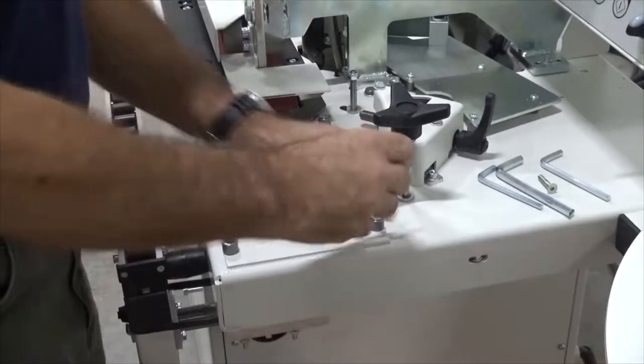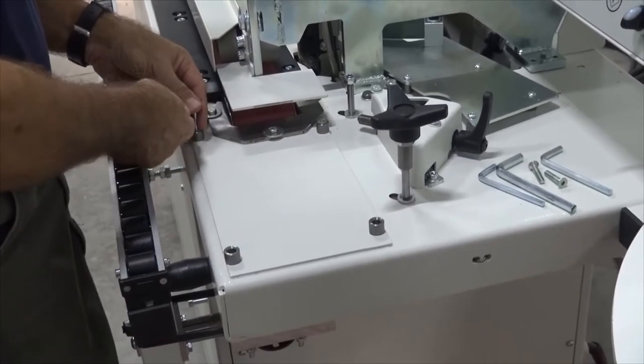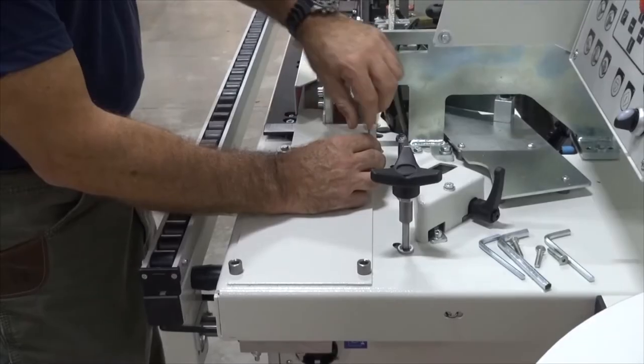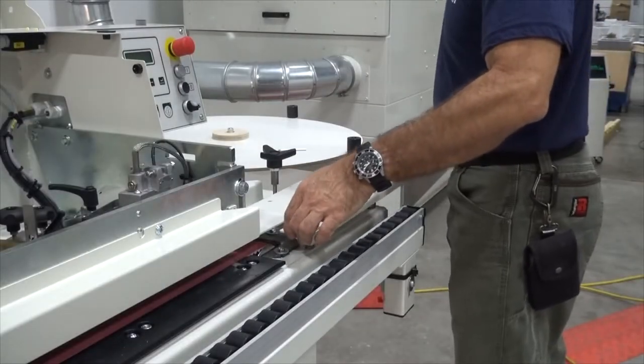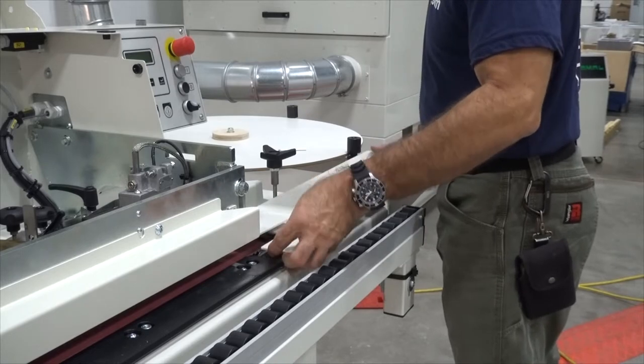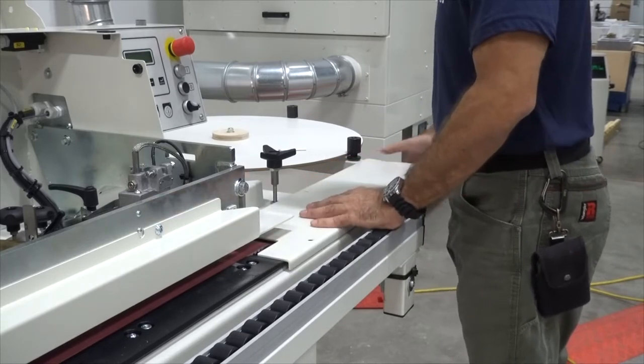Next install the infeed table. The spacers need to stay in place so carefully position the table while inserting the screws loosely at first. And then once all four are in place, tighten them down.